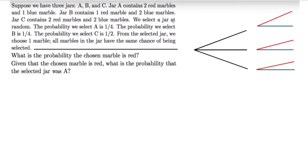We select a jar at random. The probability we select A is one-fourth, the probability we select B is one-fourth, and the probability we select C is one-half. From the selected jar, we choose one marble, and all marbles in the jar have the same chance of being selected.